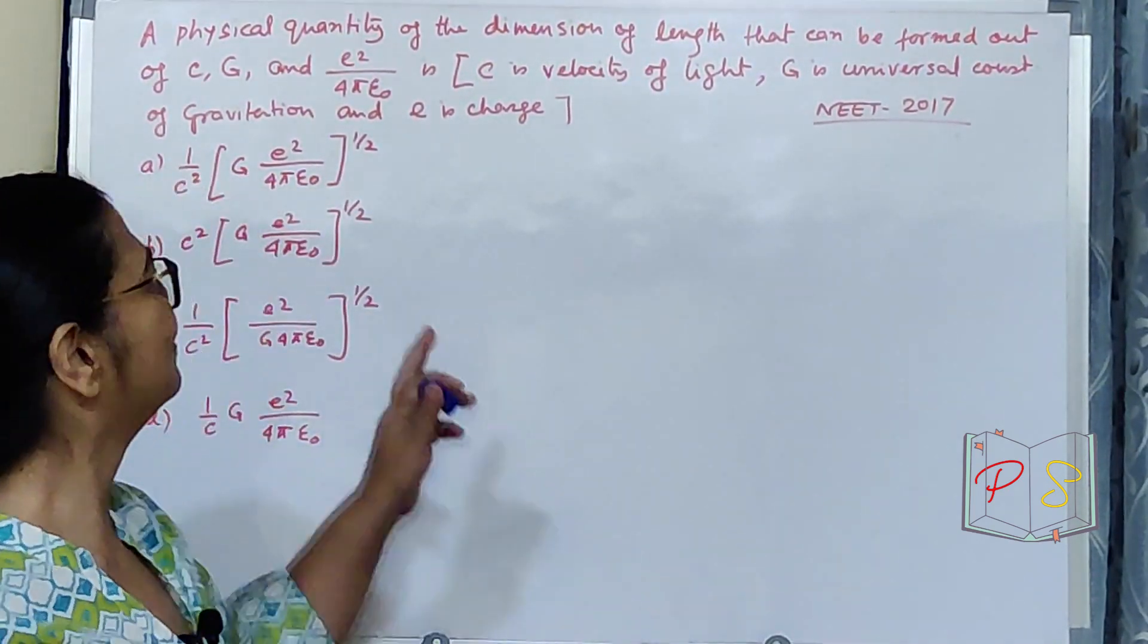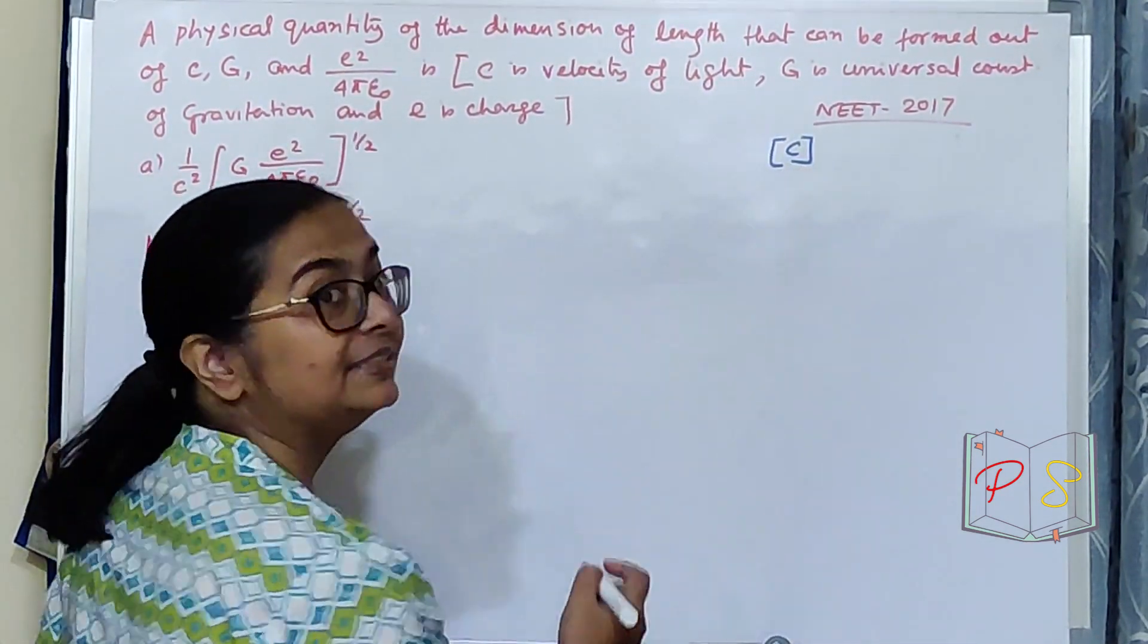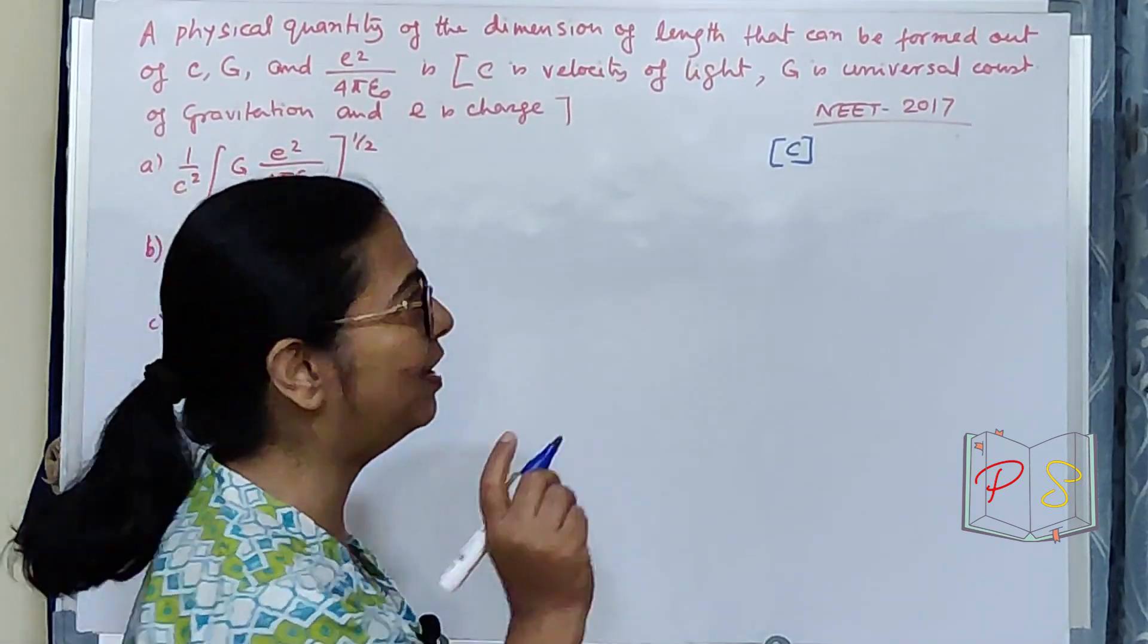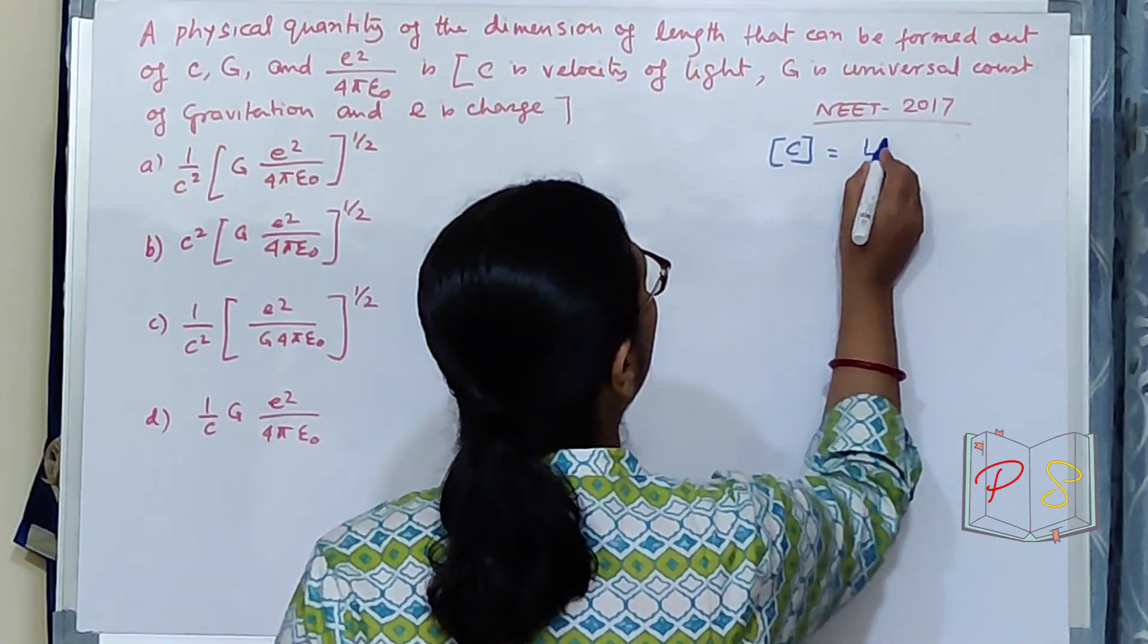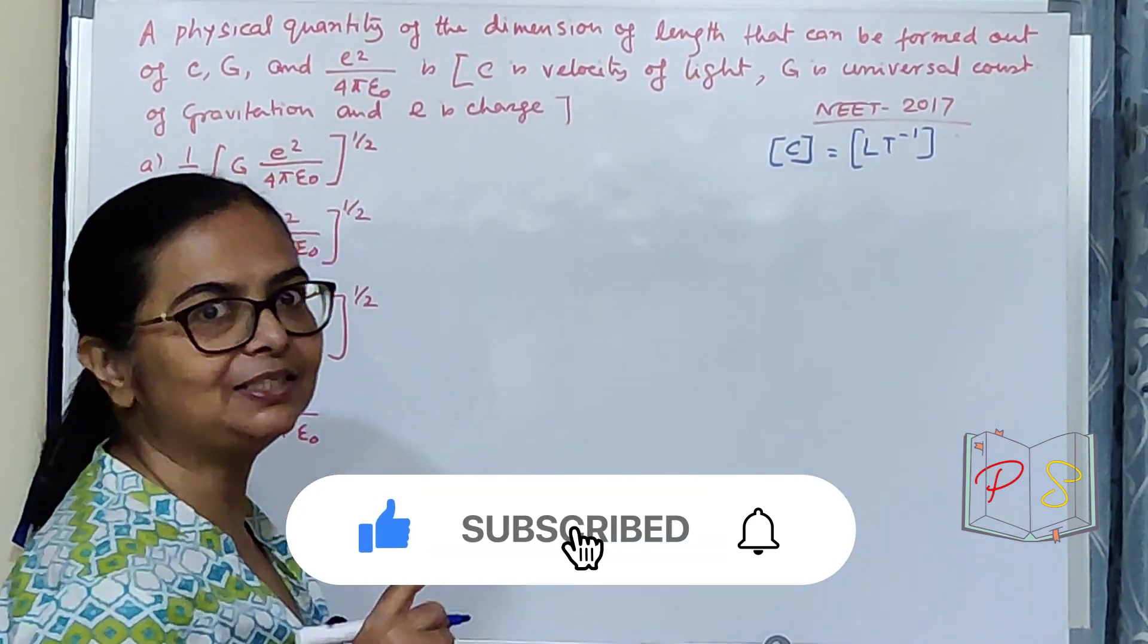Let us try. C, what is the dimension of C? C is velocity, velocity of light. So, L T minus 1, this is the dimension of C.